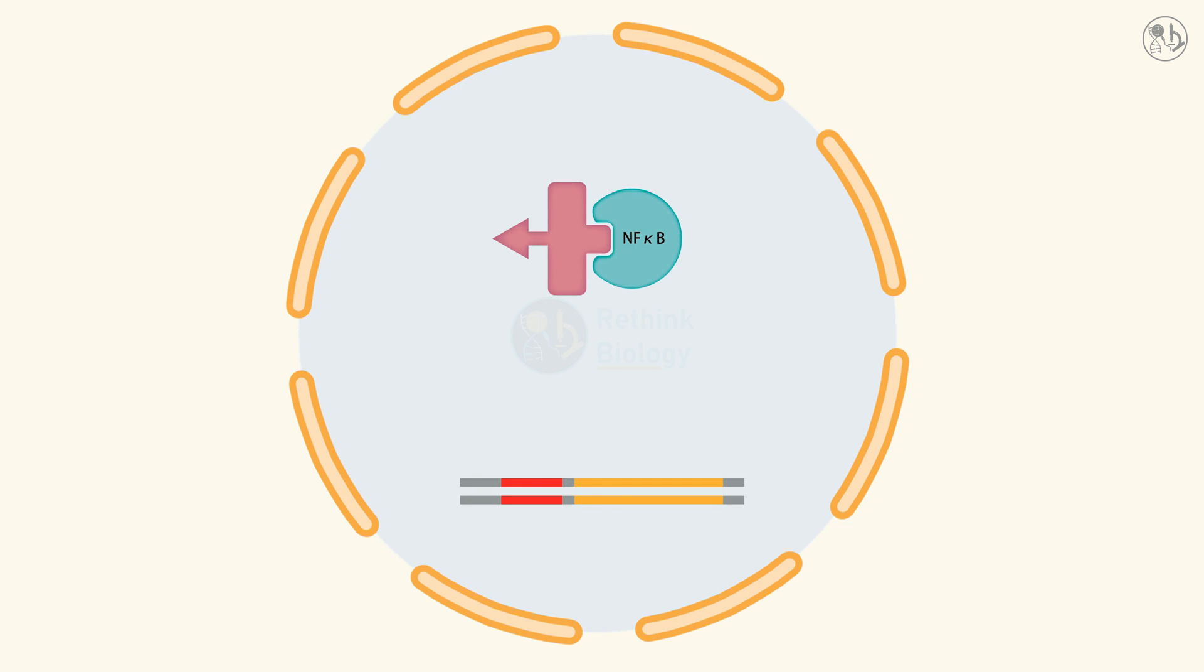In the nucleus, NF-kappa-b binds to a specific DNA sequence and activates the transcription of genes that promote cell survival, such as BCL2, CIAP, and FLIP.